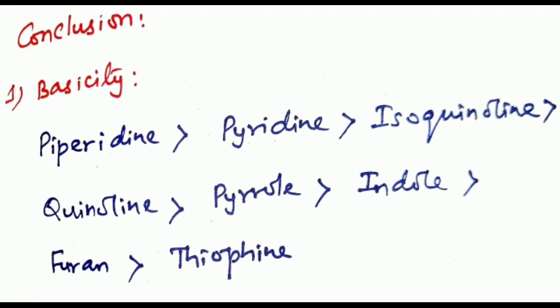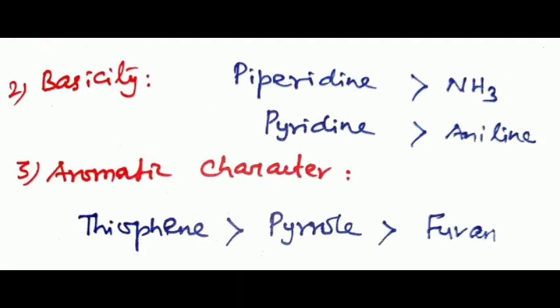Conclusion. First, order of basicity of heterocyclic compounds: piperidine is more basic than pyridine, then isoquinoline, quinoline, pyrrole, indole, furan and thiophene. Thiophene is the least basic compound. Similarly piperidine is more basic than ammonia and pyridine is more basic than aniline.